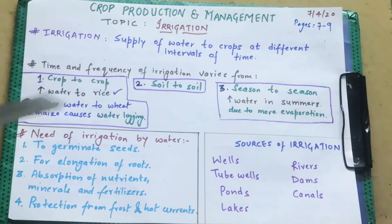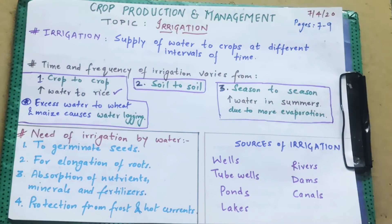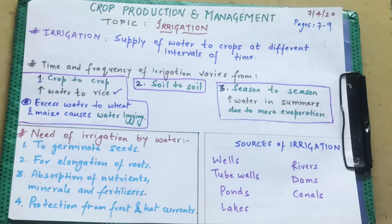अब बात करते हैं need of irrigation — पानी देने की ज़रूरत क्यों है? पहली बात है to germinate seeds। अगर आप पानी नहीं देंगे, अगर soil dry रहेगा, तो seeds कभी भी germinate नहीं हो पाएंगे। Germinate मतलब seeds के अंदर का जो part है, वो कभी भी टूट के बाहर नहीं आ पाएगा soil से और कभी भी plant नहीं बन पाएगा।